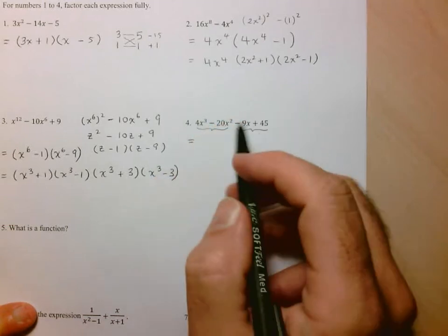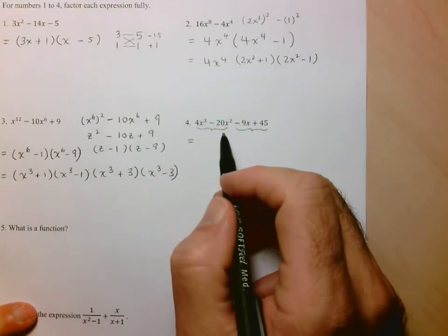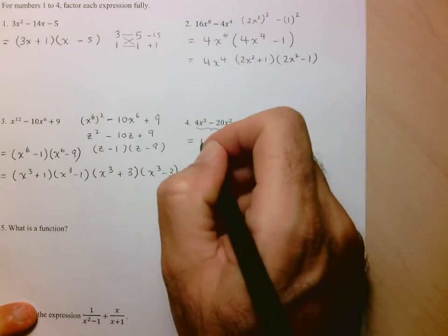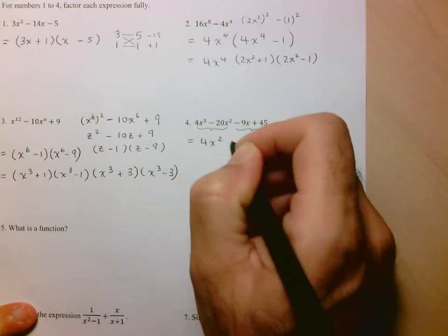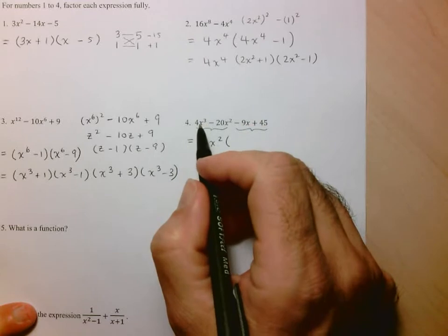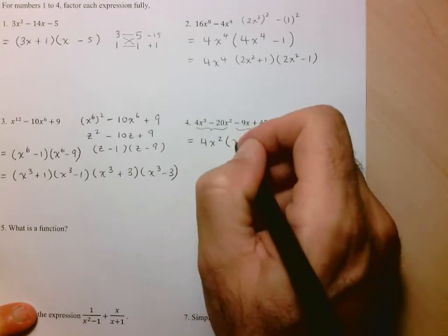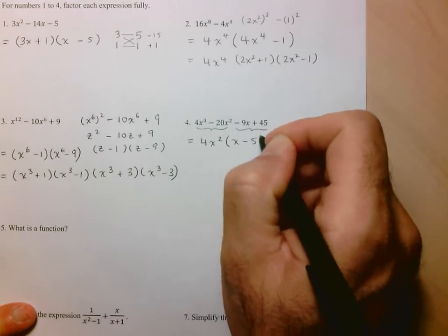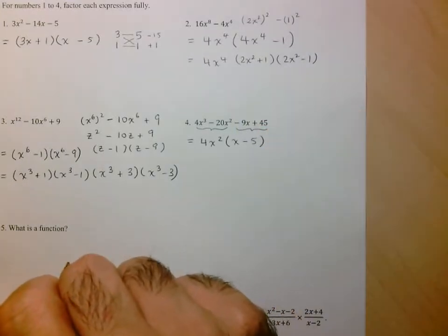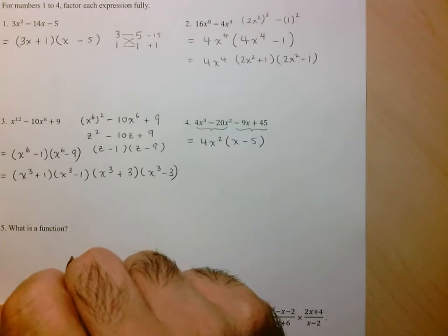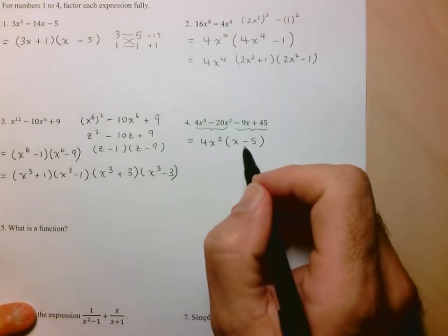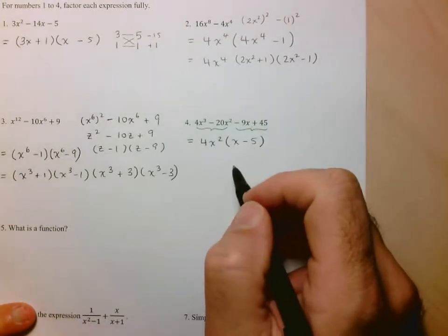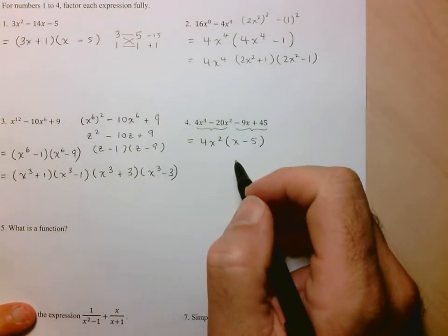And now, we factor these binomials individually. So we'll start with factoring the first two terms, and we see that they have a common factor of 4x squared. When we factor that out, well, we're just left with an x in the first term, and here we're left with a minus 5 in the second term.